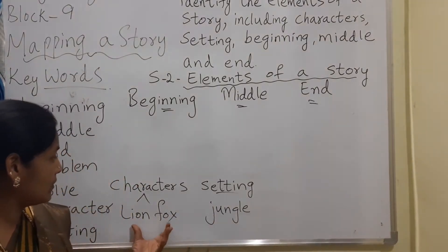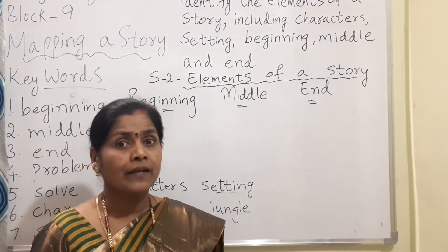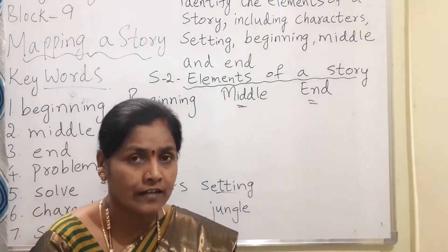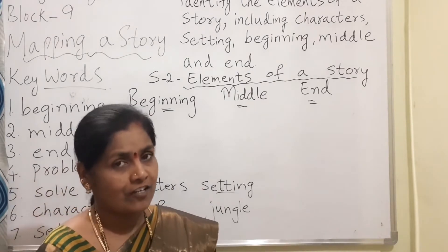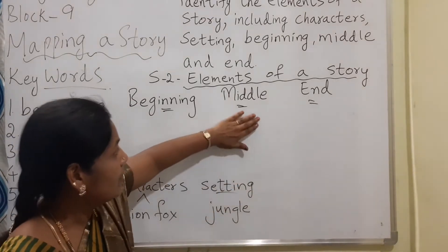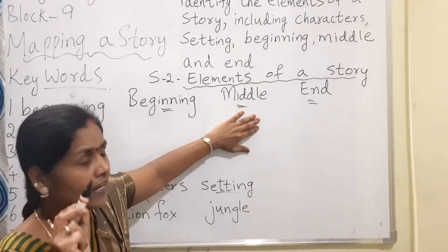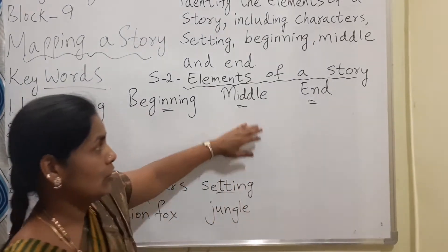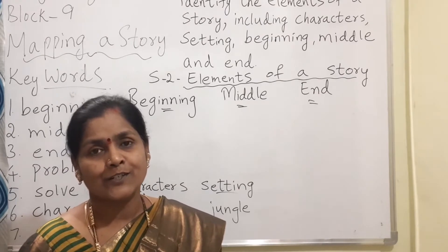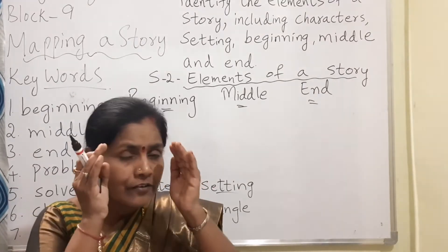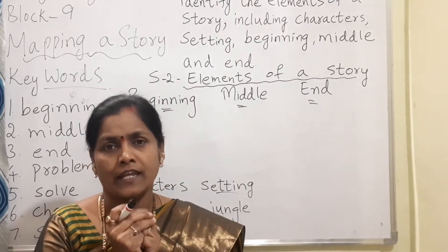If we take the example of this lion and fox story — in the beginning of the story, what happened? The lion and the fox were living there. The lion was very hungry and it wanted to eat the fox. In the middle of the story, the fox was very clever and it played a trick and escaped. And in the end, the lion was very sad and the fox was very happy. This is the elements of the story applied to the lion and fox story.